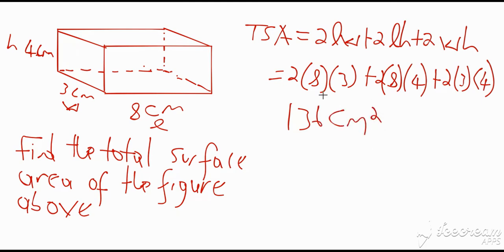You don't have to memorize the formula. You can simply look at the figure and visualize it: the front and the back are the same, the two sides are the same, and the top and bottom are the same. For each pair, multiply the relevant dimensions and double them. Since for a rectangle the opposite sides are equal, you can work it out by visualization instead of using the formula. There are two approaches — memorize the formula or just visualize it — whichever you find easier is up to you.